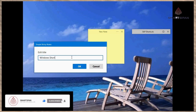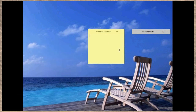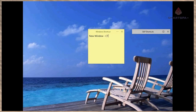Its usage is delightfully simple. To begin with, a user simply double-clicks on the Simple Sticky Notes system tray icon. Or else they can right-click on the tray icon and following this, click or tap on new note.